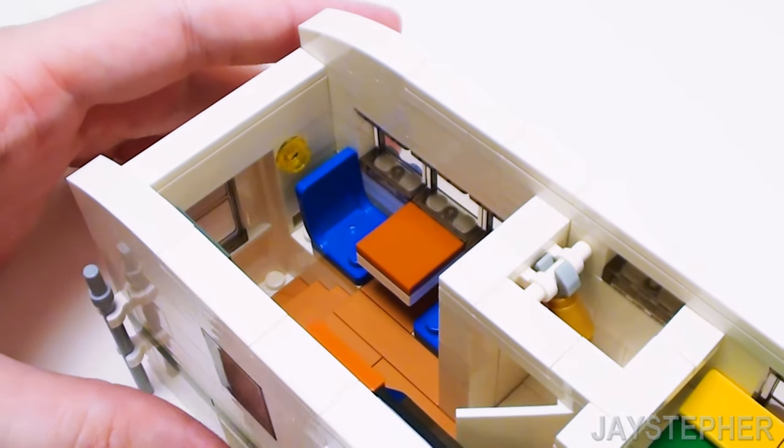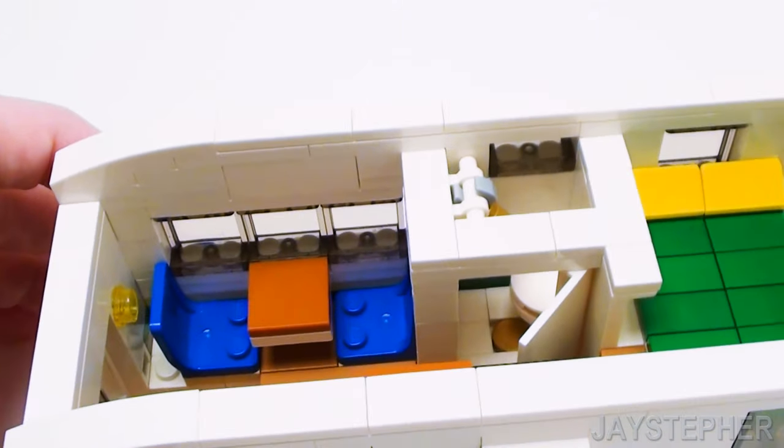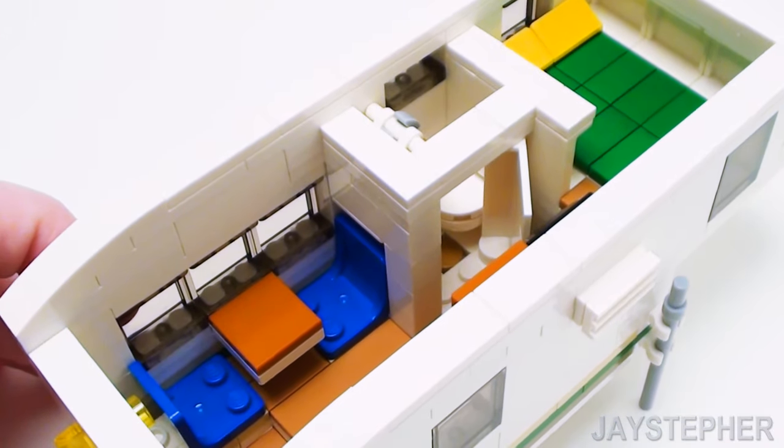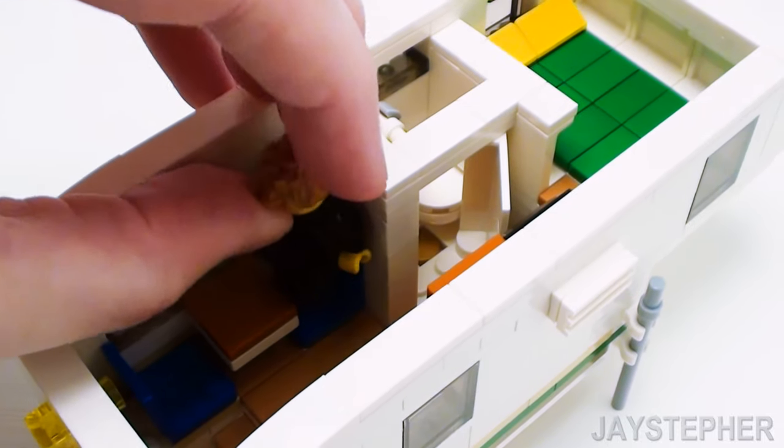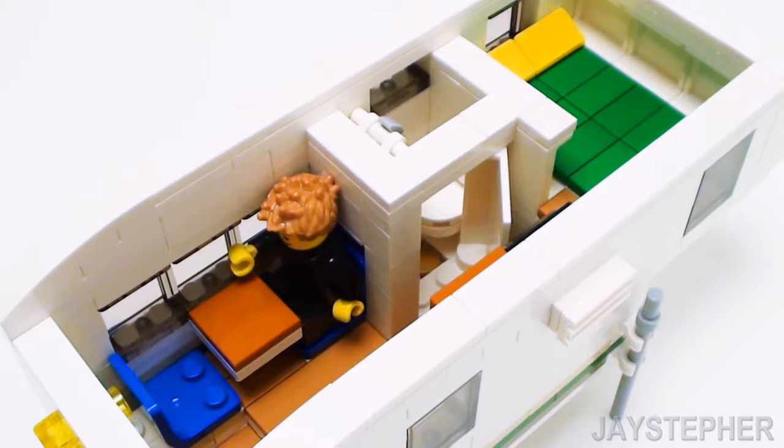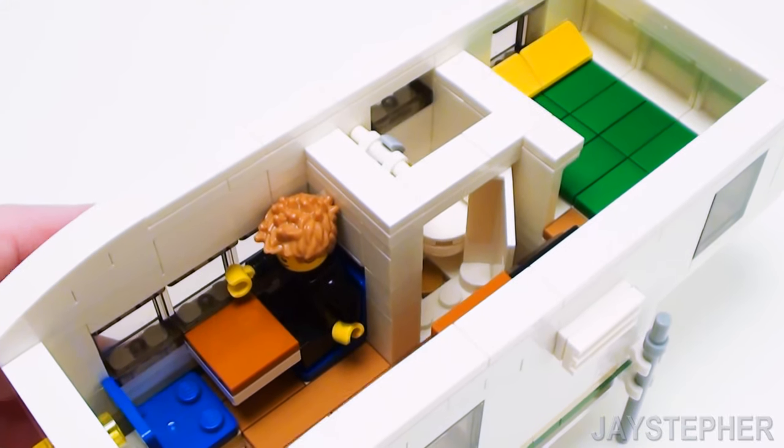Here's the dinette booth. It does seat up to two minifigures. Here we have Jay the surfer. He does slip in. Really nice. It's a bit of a tight fit.